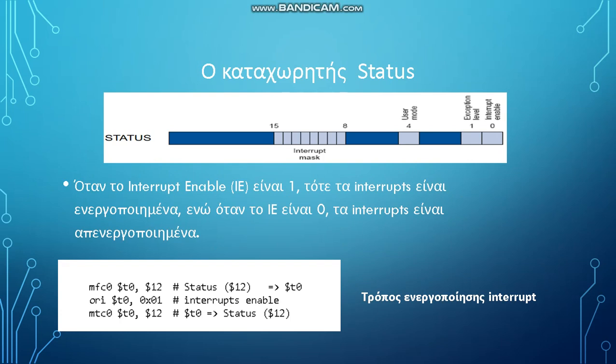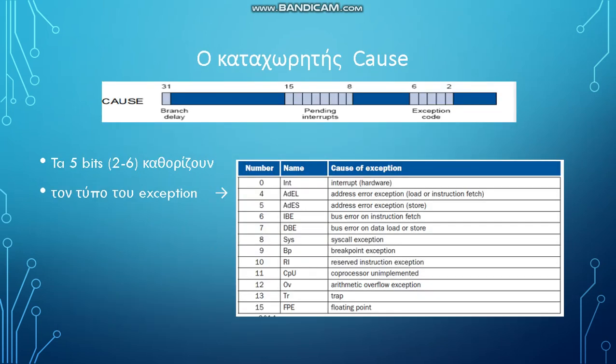We also show a piece of code on how to enable interrupts. Regarding the cause register, bits 2 through 6 determine the type of the exception.